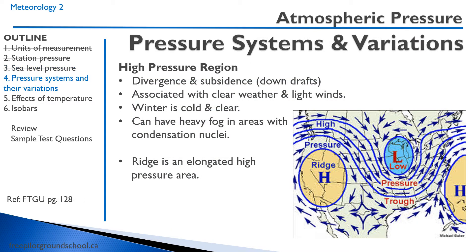Now we start talking about atmospheric phenomena — pressure systems and variation. A high pressure region, indicated by a big H, is an area where atmospheric pressure is relatively higher than surrounding areas. High pressure regions are generally associated with divergence and subsidence — that's downdrafts. Air moves outward from the high pressure region, and that air is replaced from above. High pressure regions are typically associated with clear weather and light winds. In wintertime, this means cold and clear air, often for days at a time.